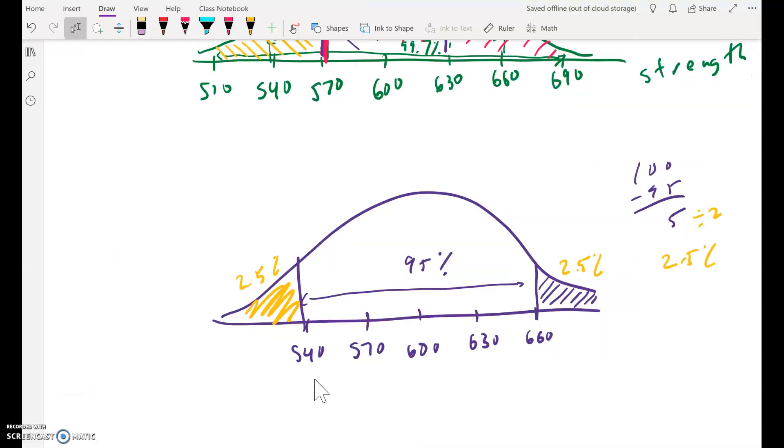Here we go. I started drawing the picture. So 600 is in the middle. The mean is 600. The standard deviation is 30. So I drew two standard deviations out.